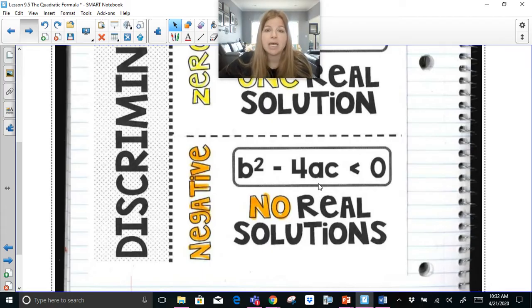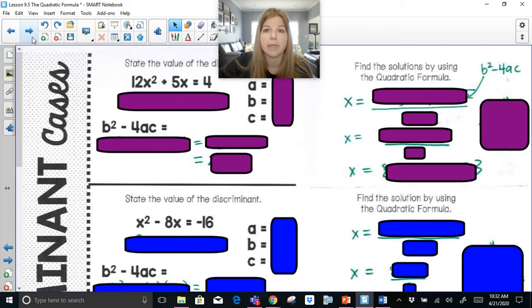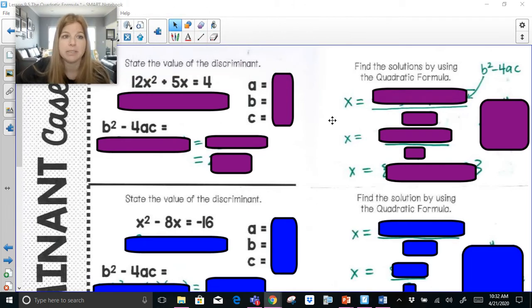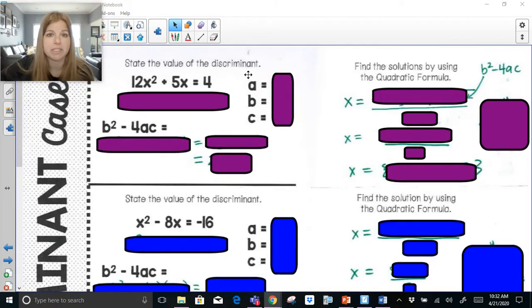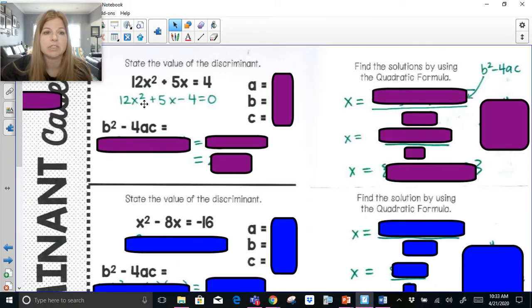The first example is the situation where there's going to be two solutions, a positive discriminant. Here I have 12x squared plus 5x equals 4. This equation is not in the proper form where it's set equal to zero. By subtracting four on both sides, we get 12x squared plus 5x minus 4 equals zero.